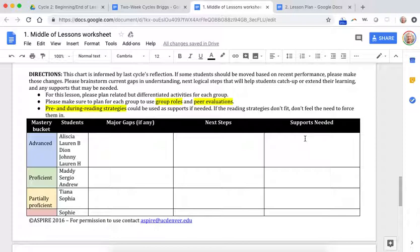And then supports needed. I think group roles and the peer evaluation could fit here. Also, any of those reading strategies can fit here. But maybe the students need some other supports. Maybe they need sentence stems. Maybe they need graphic organizers. Maybe they need a variety of support.